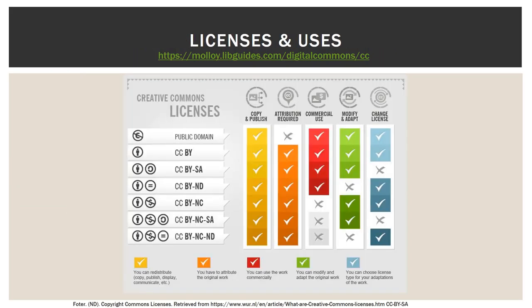Here is a handy chart showing permissions granted by each license — the URL is cited at the bottom because I did not create this chart. It carries a CC BY SA license, so I am giving credit to its creator. This is traditionally what a citation for an open access work looks like. The chart is also available on the Digital Commons LibGuide. If I were to create something new from this chart, I would also have to share it under a CC BY SA license, per the terms.